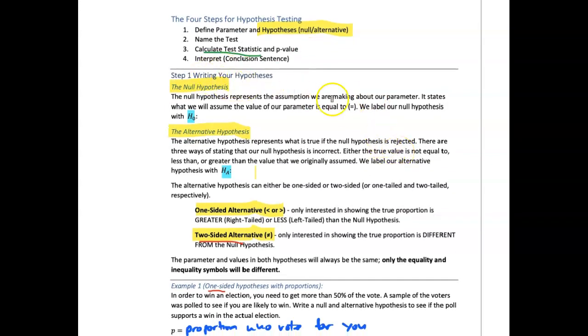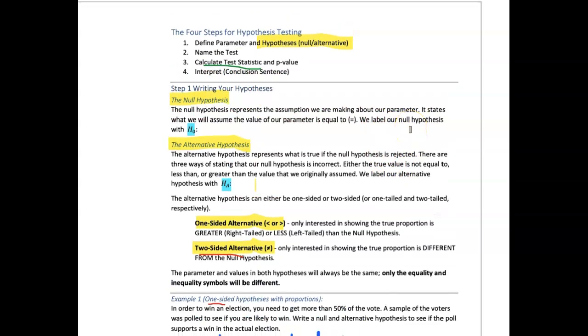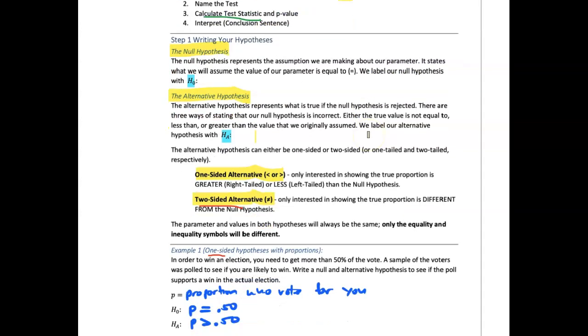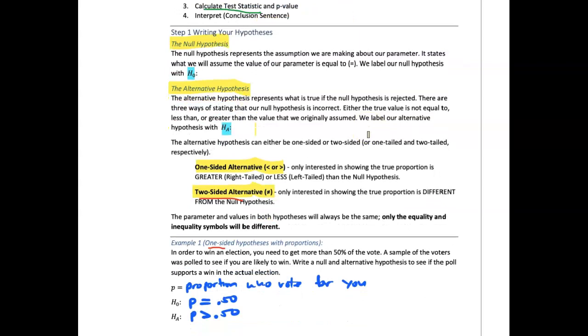We start with step one, which is writing your hypothesis. Once we know, are we doing a proportion or are we doing a mean, what's the parameter? And then we write a hypothesis. It takes a little practice. You may look at other videos to do it. We have a couple examples here.